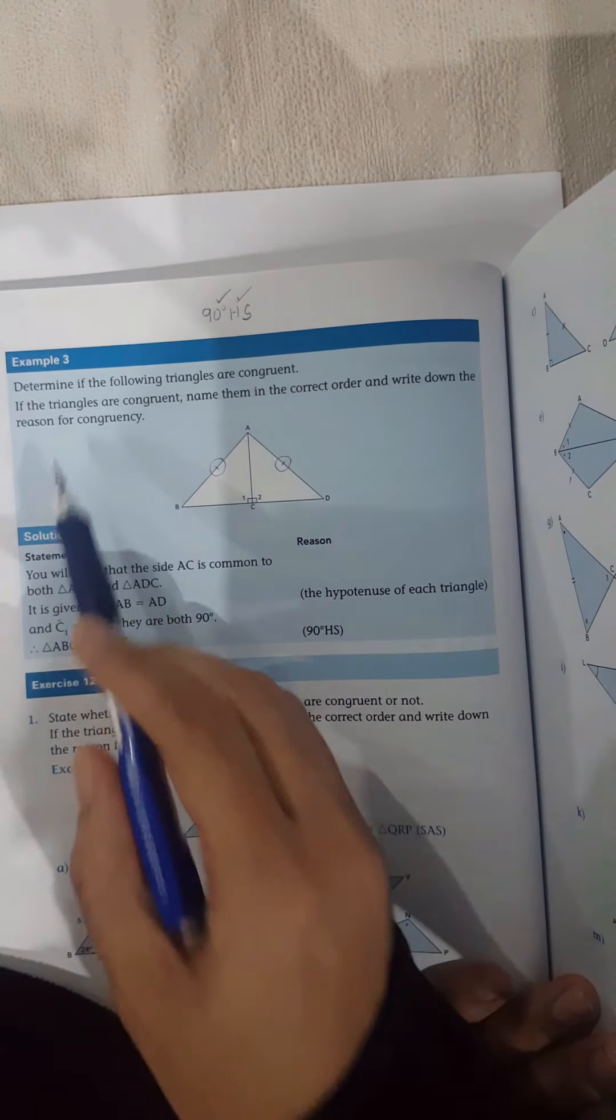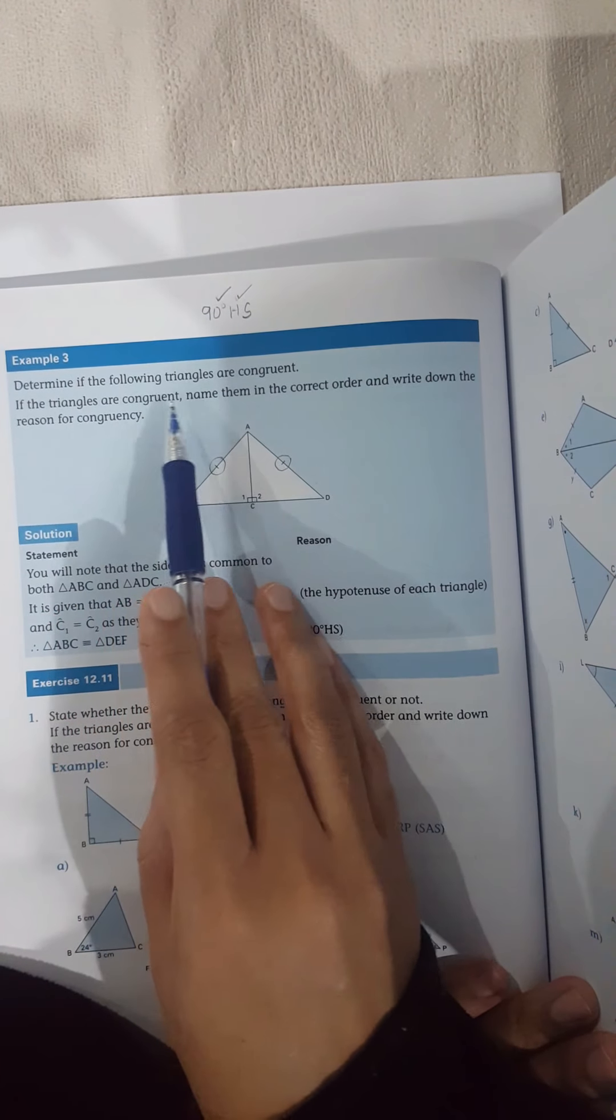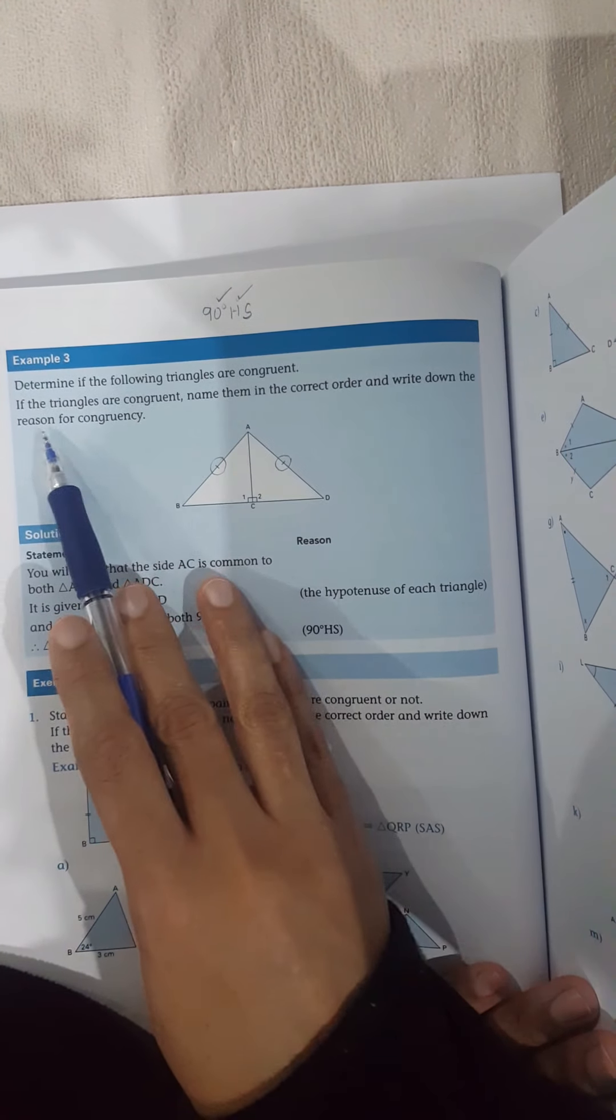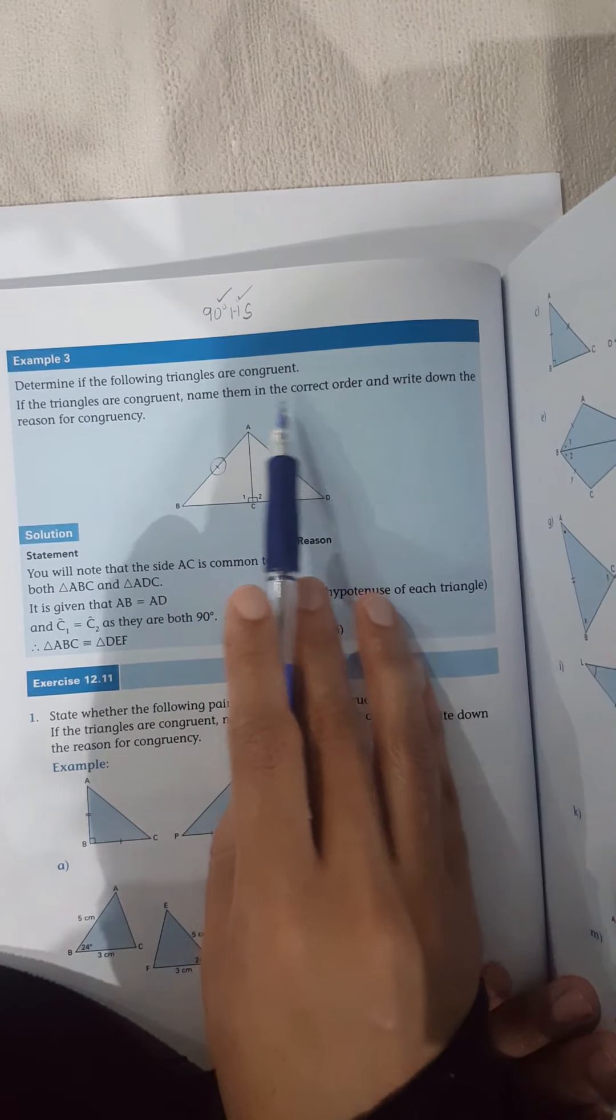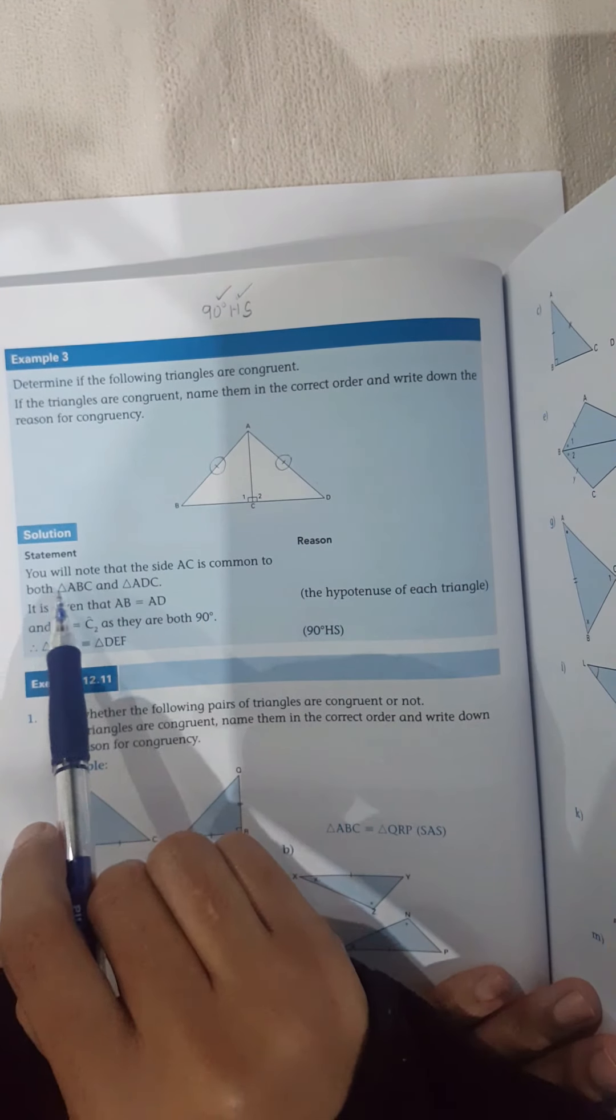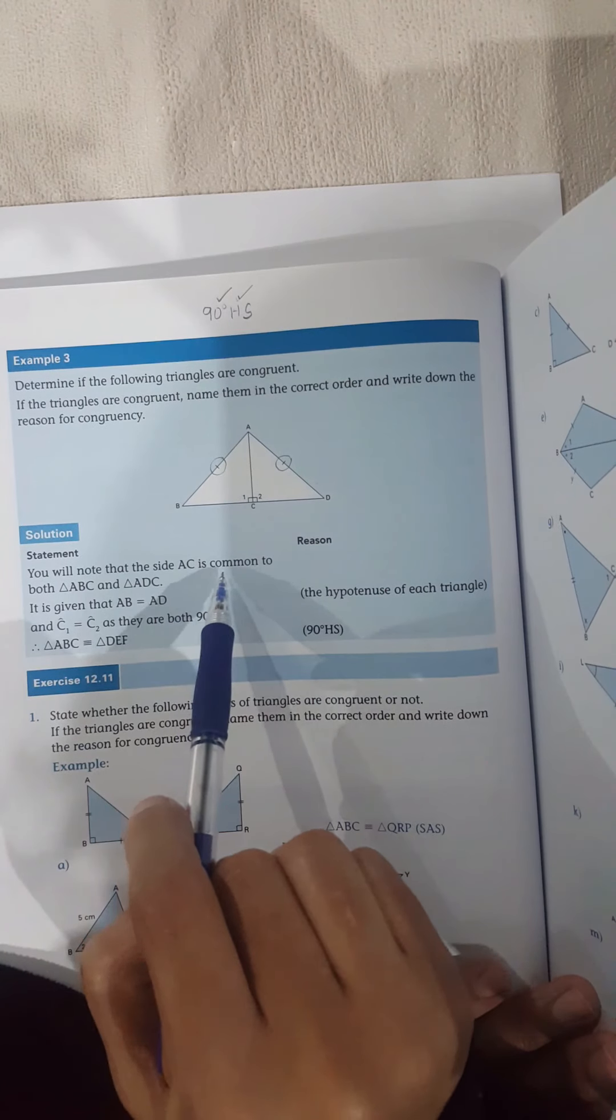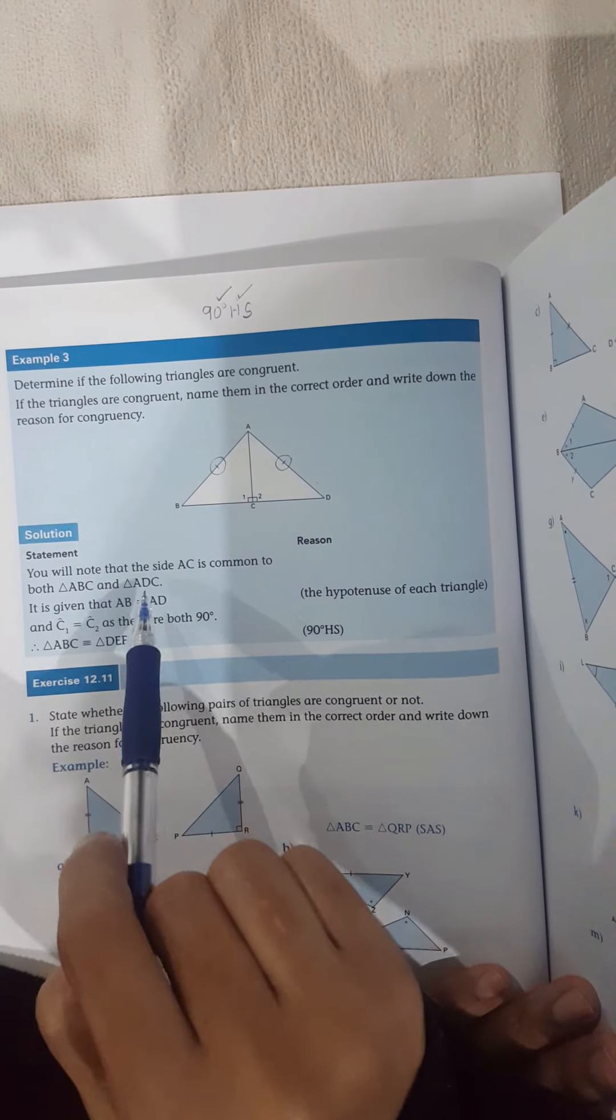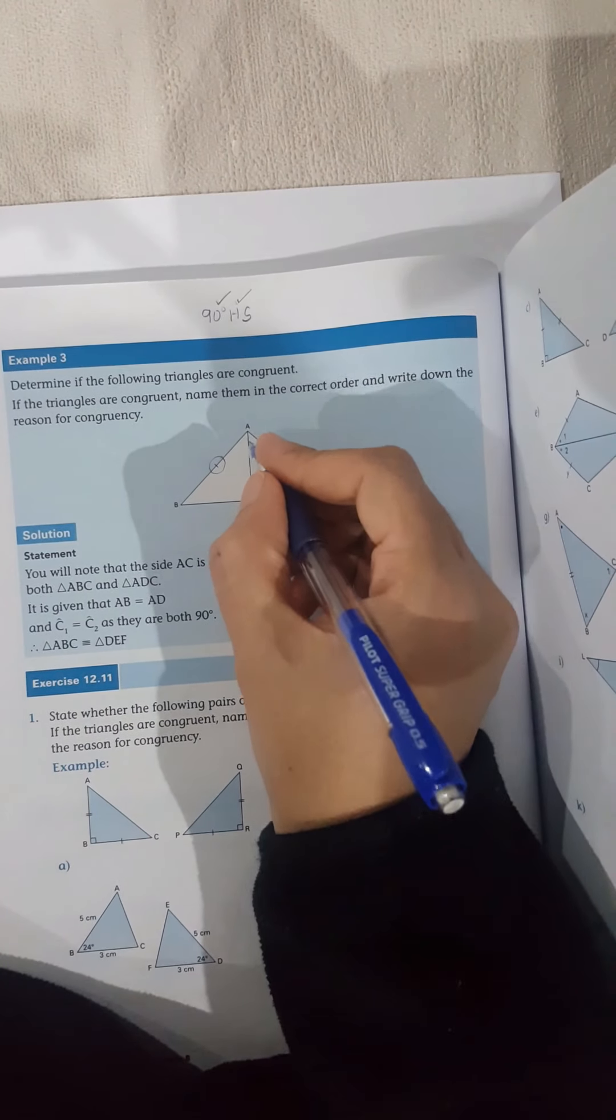Okay, let's see what they're giving us in the question. Determine if the following triangles are congruent. If the triangles are congruent, name them in the correct order and write down the reason of congruency. You will note that side AC is common to both triangle ABC and ADC.